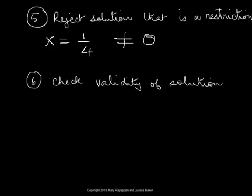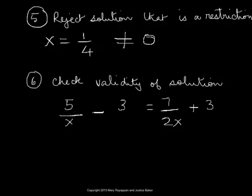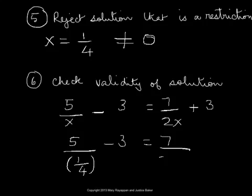We got x equals 1 fourth as the proposed solution. Let us plug that in the original equation. The original equation is 5 over x minus 3 equals 7 over 2x plus 3. We're plugging 1 fourth in the place of x, and this is what we get.